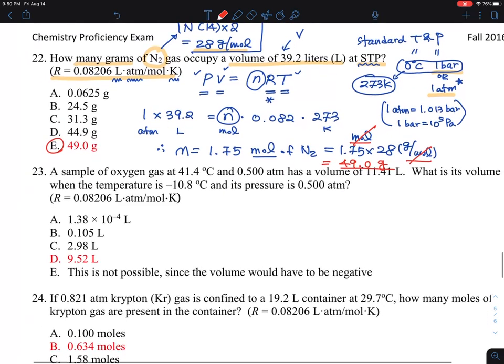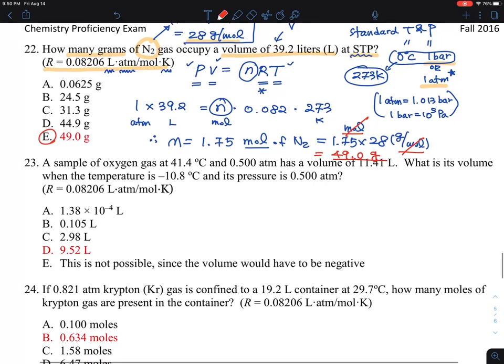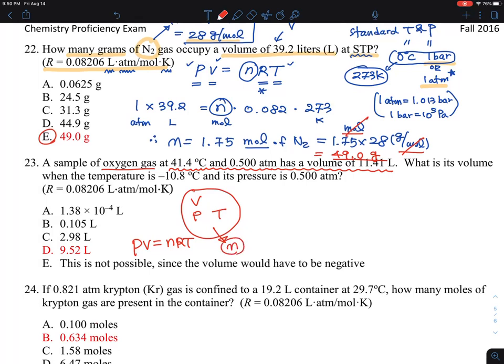Moving on to number 23. This also looks like a gas law is needed because they are talking about a sample of oxygen gas, and the temperatures and pressures, and it has a volume. So it is a container, and the volume is defined, pressure is defined, and temperature is defined. So you still remember PV equals nRT, so you can calculate N remaining constant using the ideal gas law.